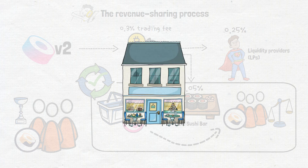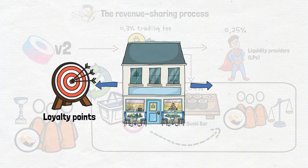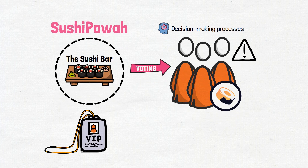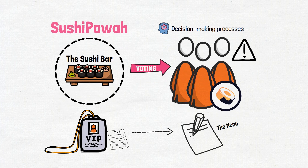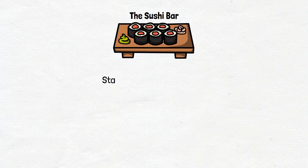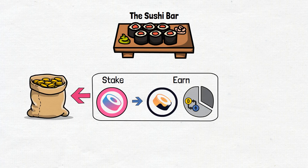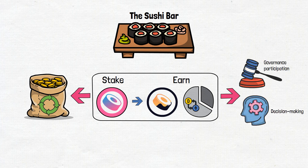This cyclical process ensures a continuous flow of rewards to XSushi holders. The Sushi bar operates within the governance structure known as Sushi Power, granting voting power to XSushi holders and empowering them to actively participate in decision-making processes and influence the platform's direction. In conclusion, the Sushi bar offers users a mechanism to stake their Sushi tokens, earn XSushi and a share of the platform's trading fees, while also bestowing governance participation and decision-making power upon XSushi holders.